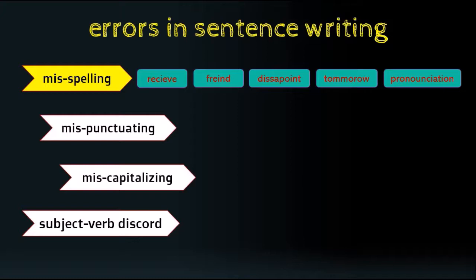In 'disappoint,' the problem is double S and single P instead of single S and double P. Similarly, 'tomorrow' should have single M and double R. For 'pronunciation,' it results from the verb 'pronounce' — in noun form it should be without the second O. To solve misspelling, consult a dictionary or turn on the spell checker in Word, Excel, or PowerPoint. Now let's see the correct spellings.